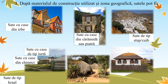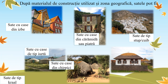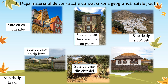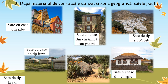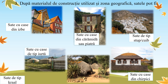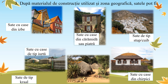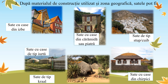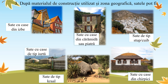Sate cu case din chirpici, specifice Europei estice, dar se întâlnesc și în Africa, în partea nord-vestică a Indiei și în America de Sud. Sate de tip Kral, specifice Africii de Sud, sunt construite din lut, au formă rotundă, au poziție circulară cu o piață centrală, încercuite de un gard format din nuiele împletite.